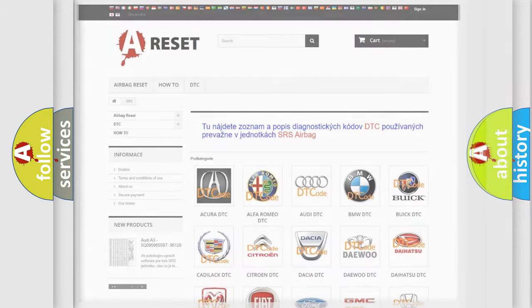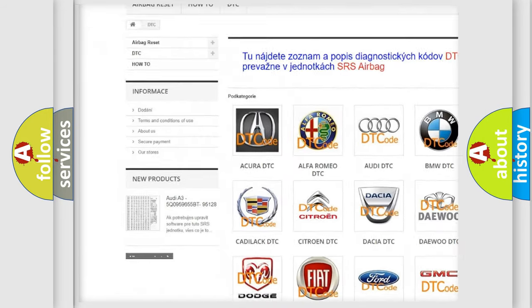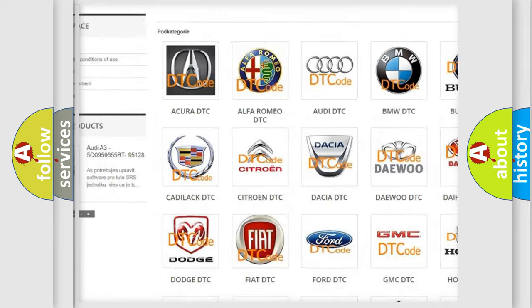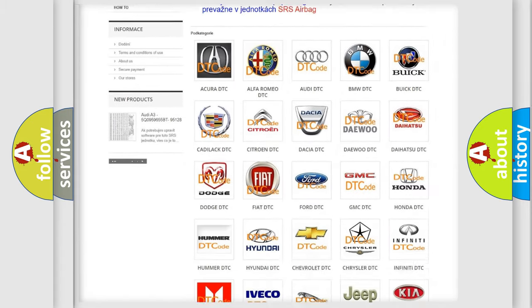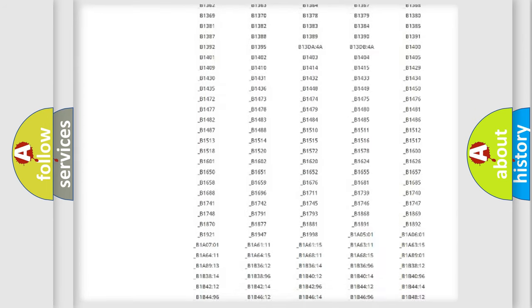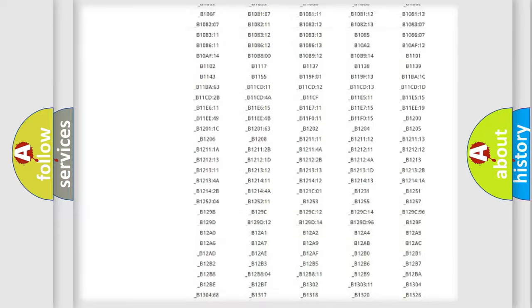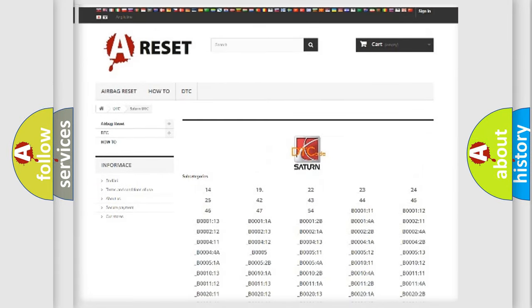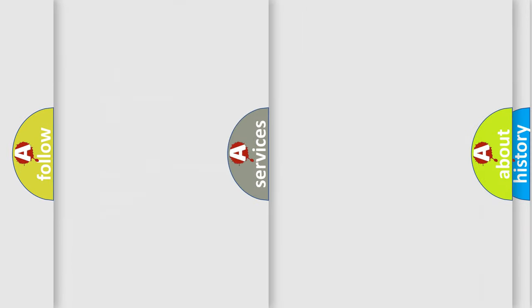Our website airbagreset.sk produces useful videos for you. You do not have to go through the OBD2 protocol anymore to know how to troubleshoot any car breakdown. You will find all the diagnostic codes that can be diagnosed in Saturn vehicles, and many other useful things.